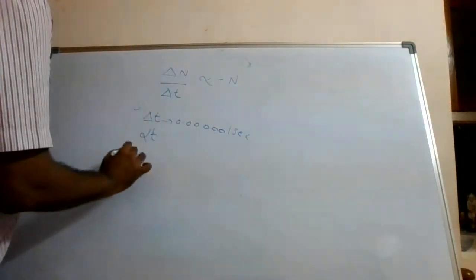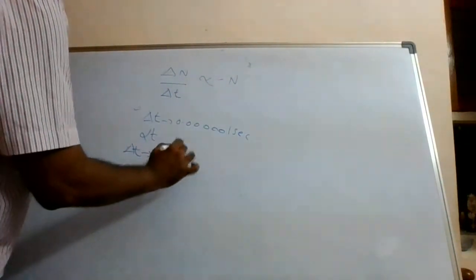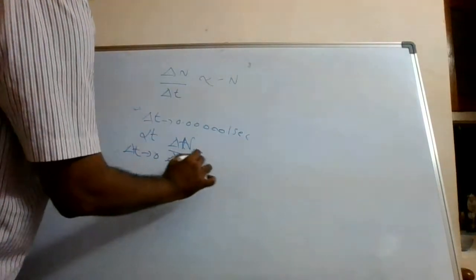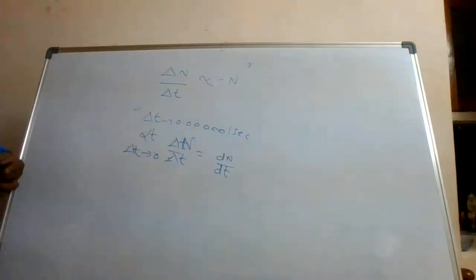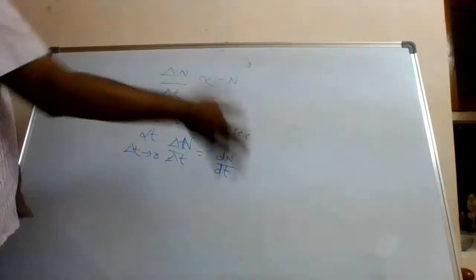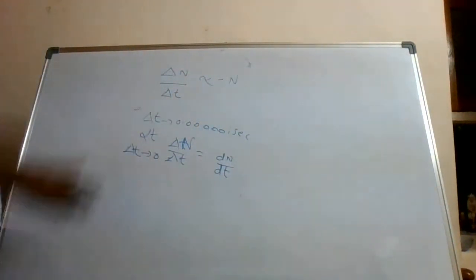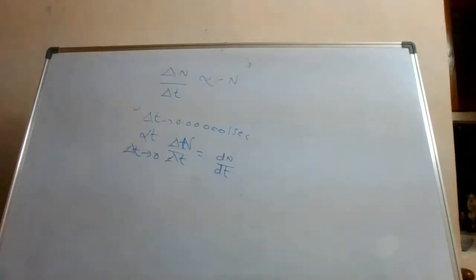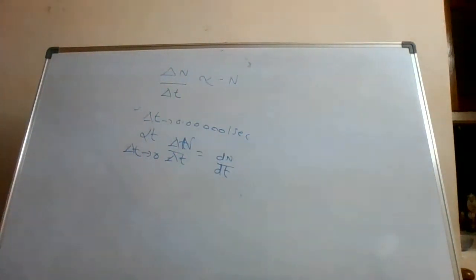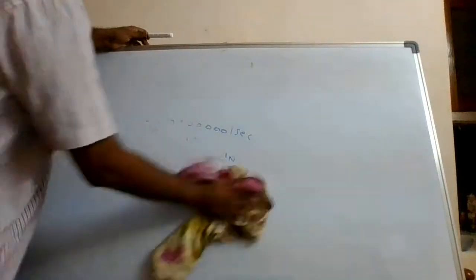Taking the limit as δt tends to 0, δN/δt becomes dN/dt — this is calculus. So the radioactive decay law says δN/δt is proportional to −N. The minus sign is because it is decaying — the number is decreasing. From 5000 it became 1000, 1000 became 500, 500 became 100 — it is decreasing, trying to become more stable.